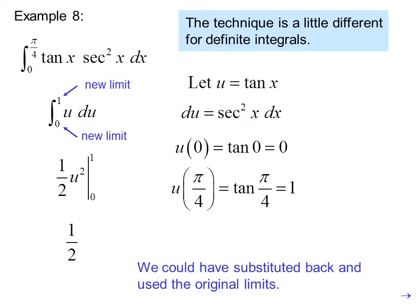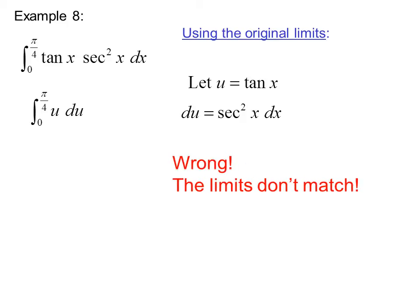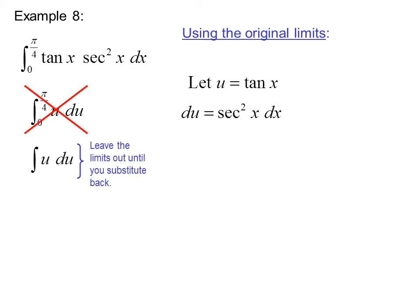We could have substituted back and used the original limits. Using the original limits, we let u equal tangent x du equals secant squared x dx. Now you might write the integral from 0 to pi over 4 of u du, but that would be wrong. The limits don't match. These are limits for x, not for u. So we can't do it that way. We leave the limits out until you substitute back.